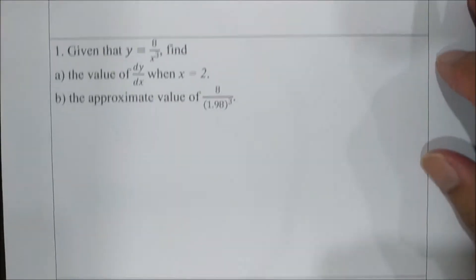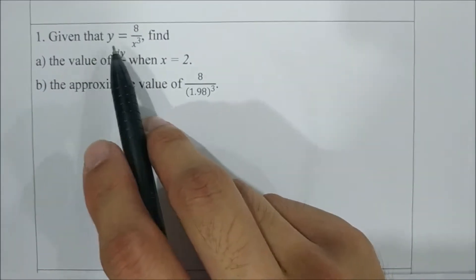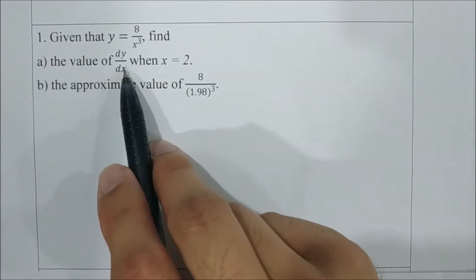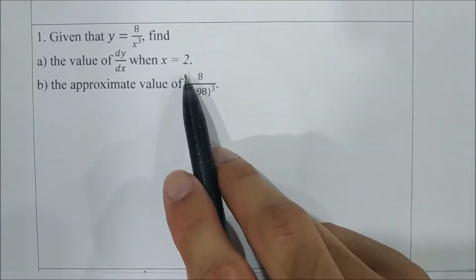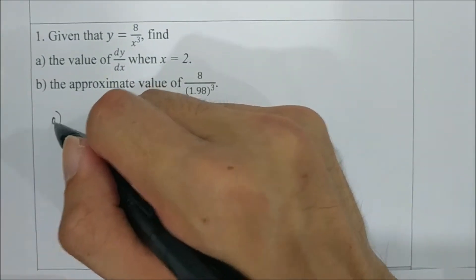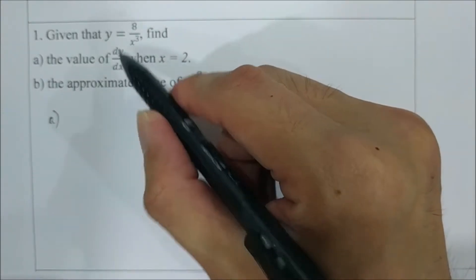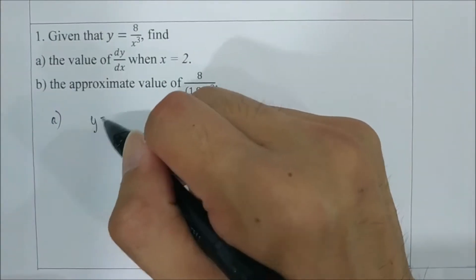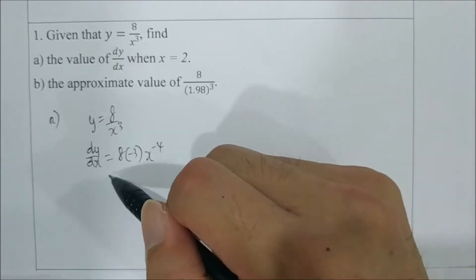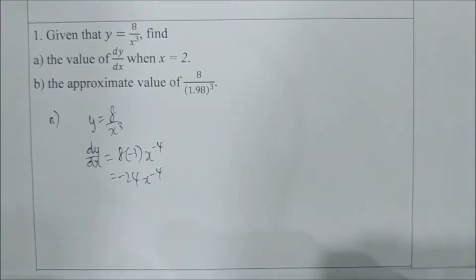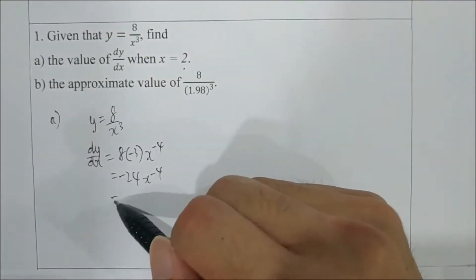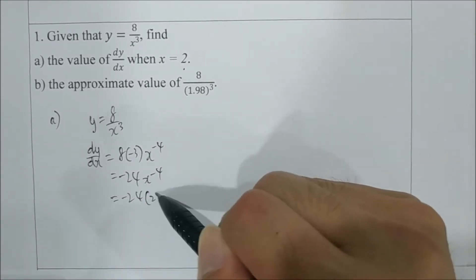Now we look at the examples. Given that y equals 8 over x cubed, find the value of dy/dx when x is equal to 2. For part A, we find dy/dx, then substitute x equals 2 to get the value.